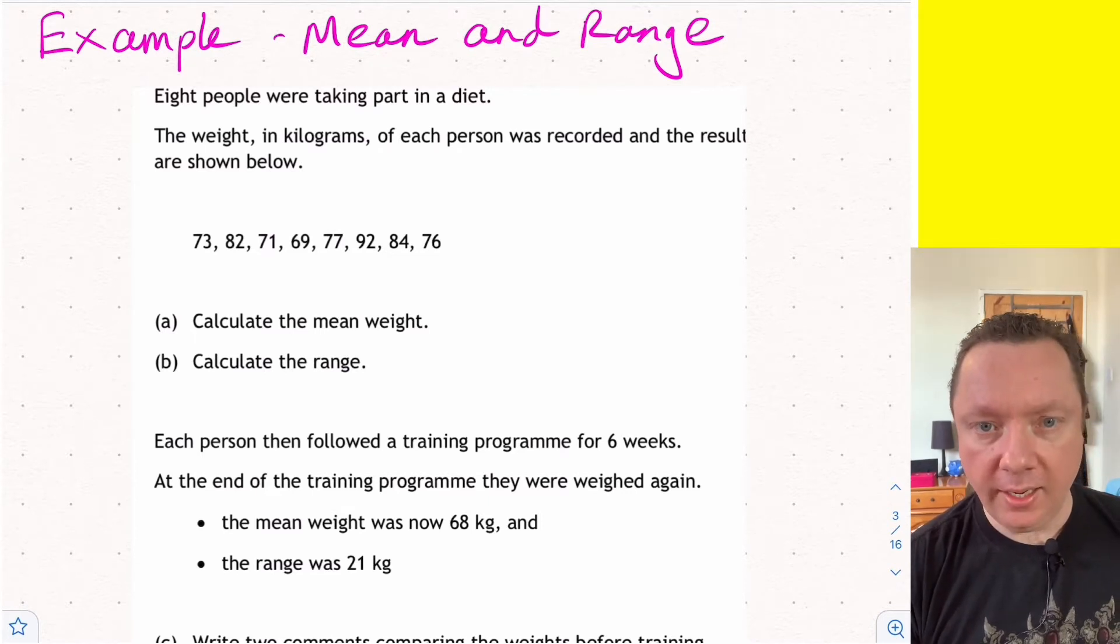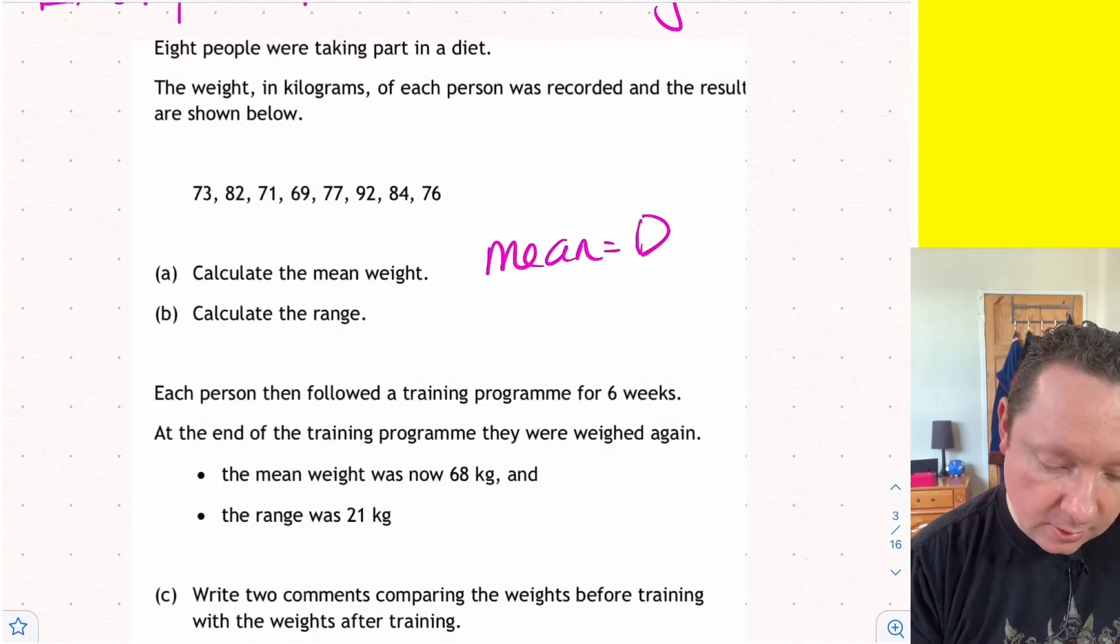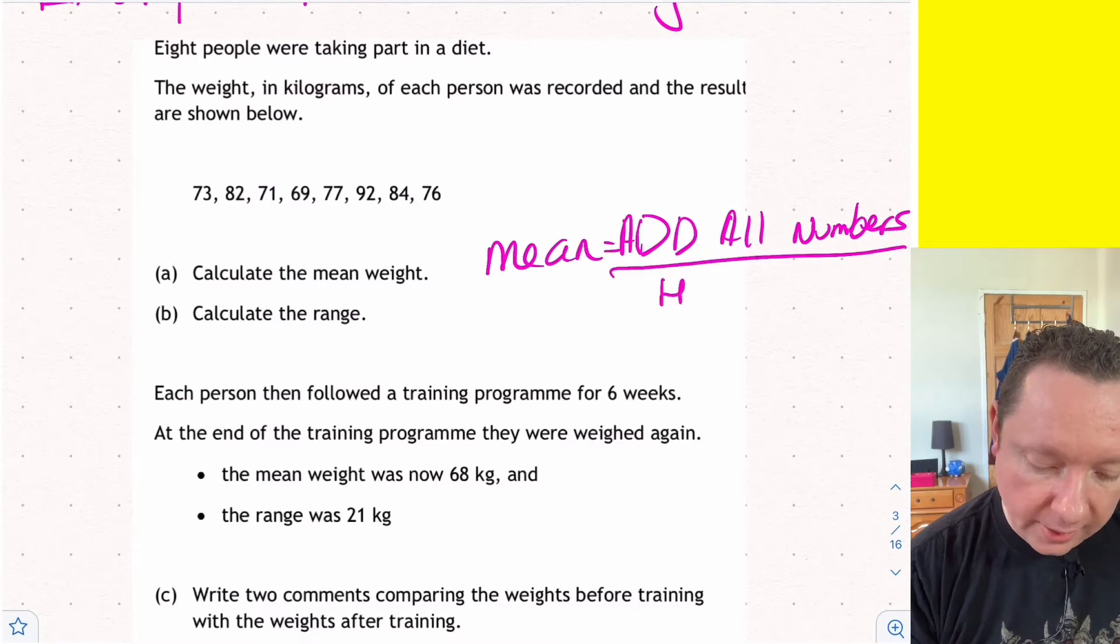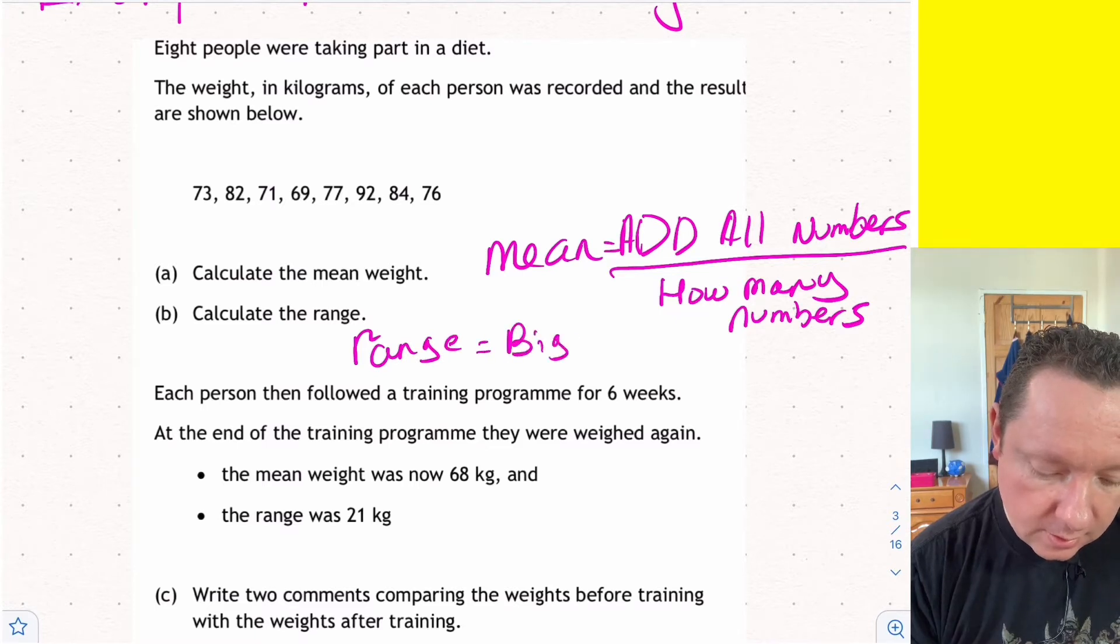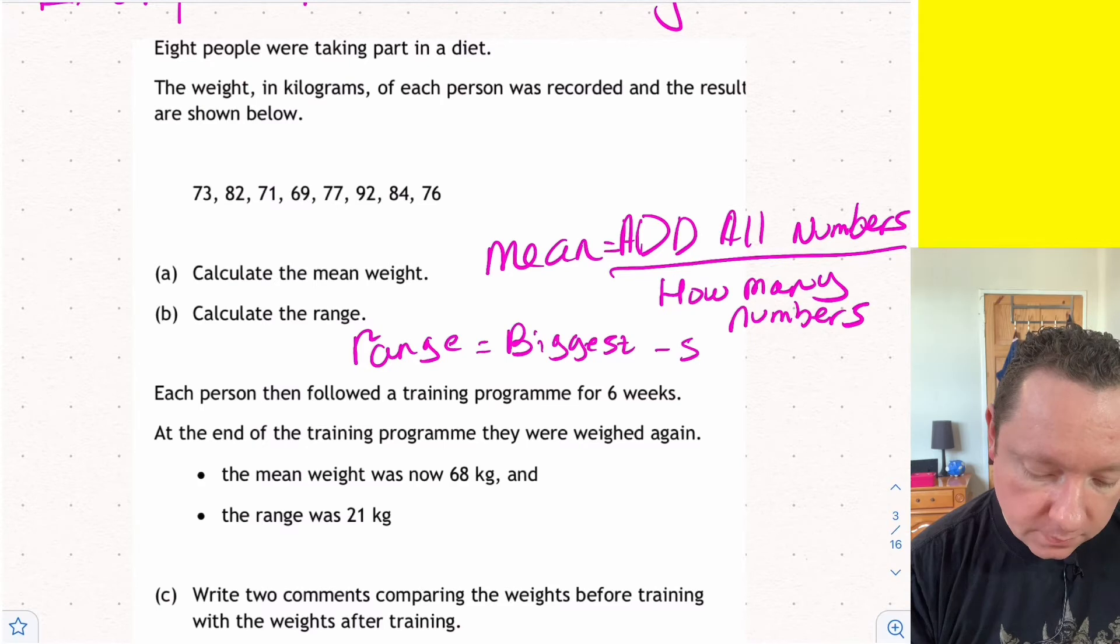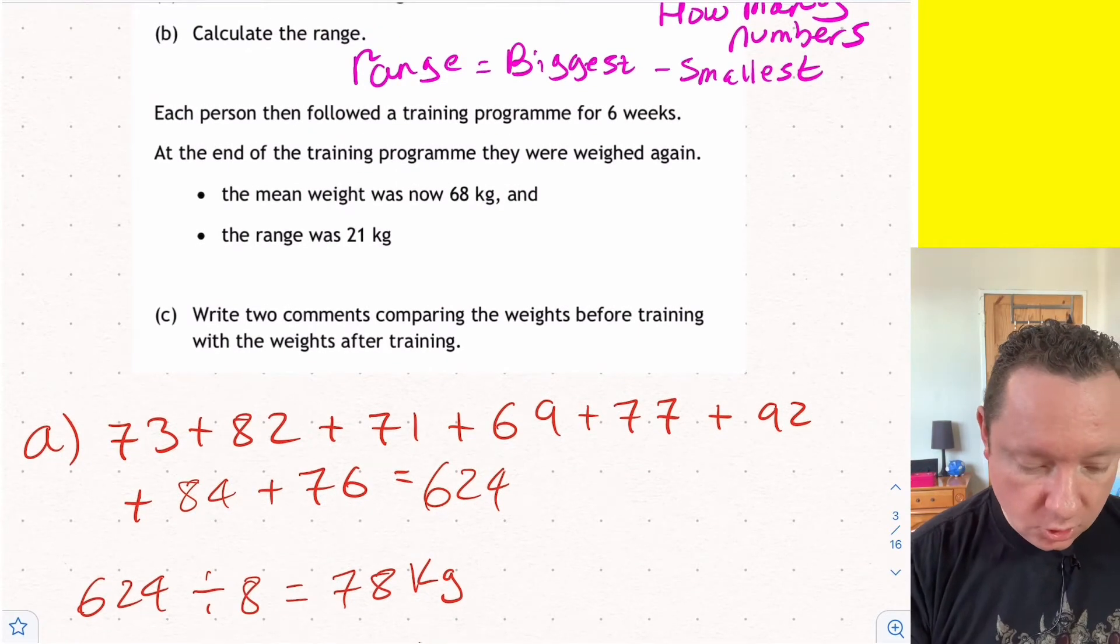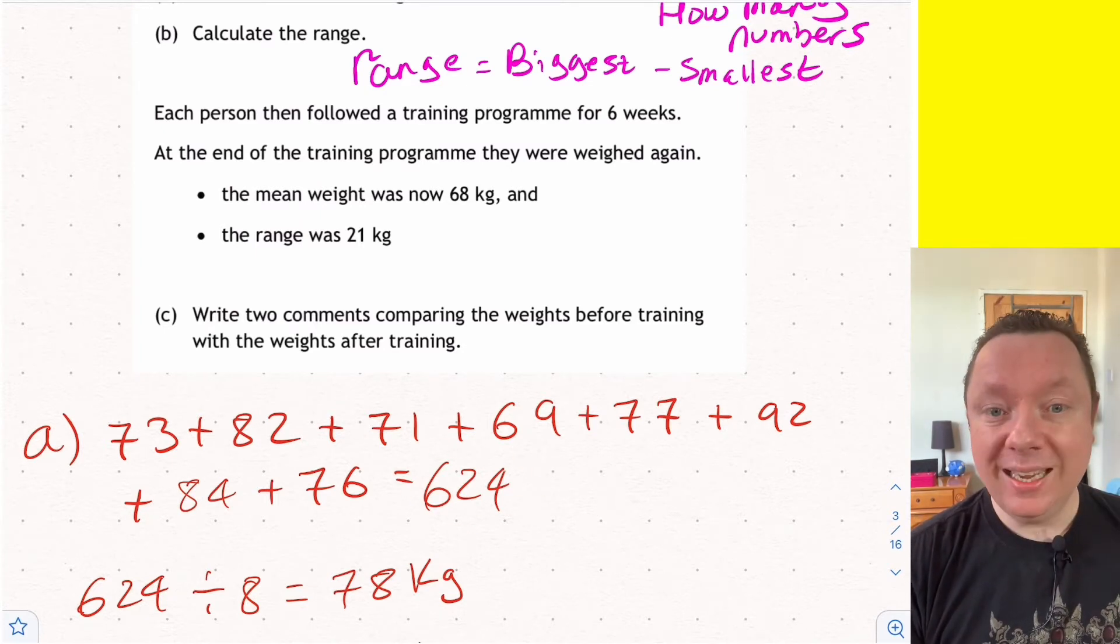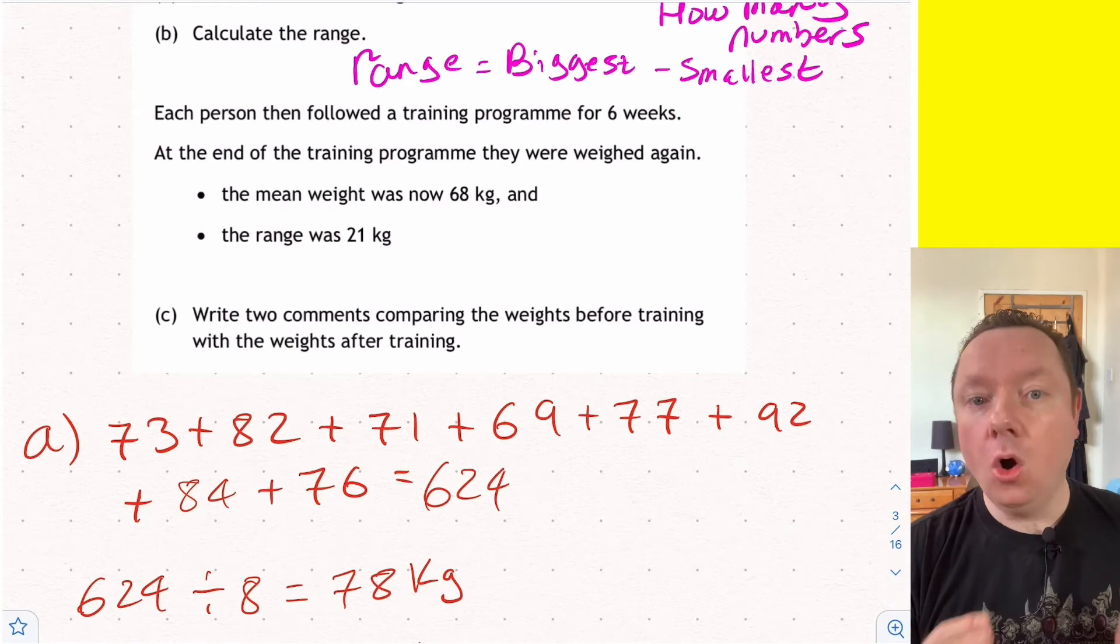Let's just start off with mean and range. A quick reminder: mean, you just add all the numbers and then divide by how many numbers. And then for range, it's just the biggest take away the smallest. So let's do that below. There's all my numbers. I've just added them all up. I've used the calculator, make sure you do. And I get 624. There's 8 numbers, so I've done 624 divided by 8 and got 78 as a nice answer, 78 kilograms.